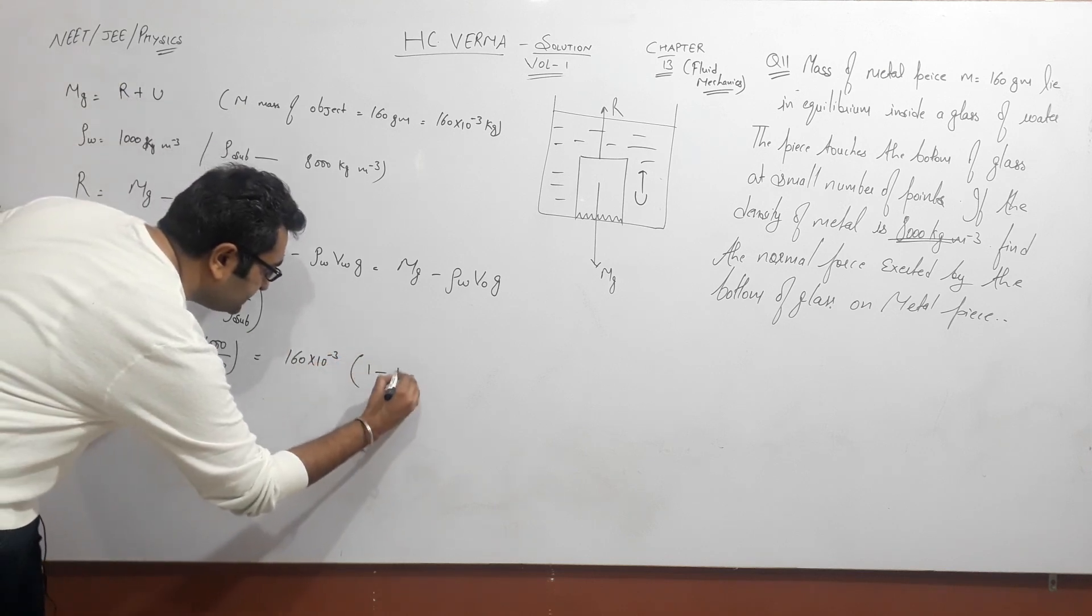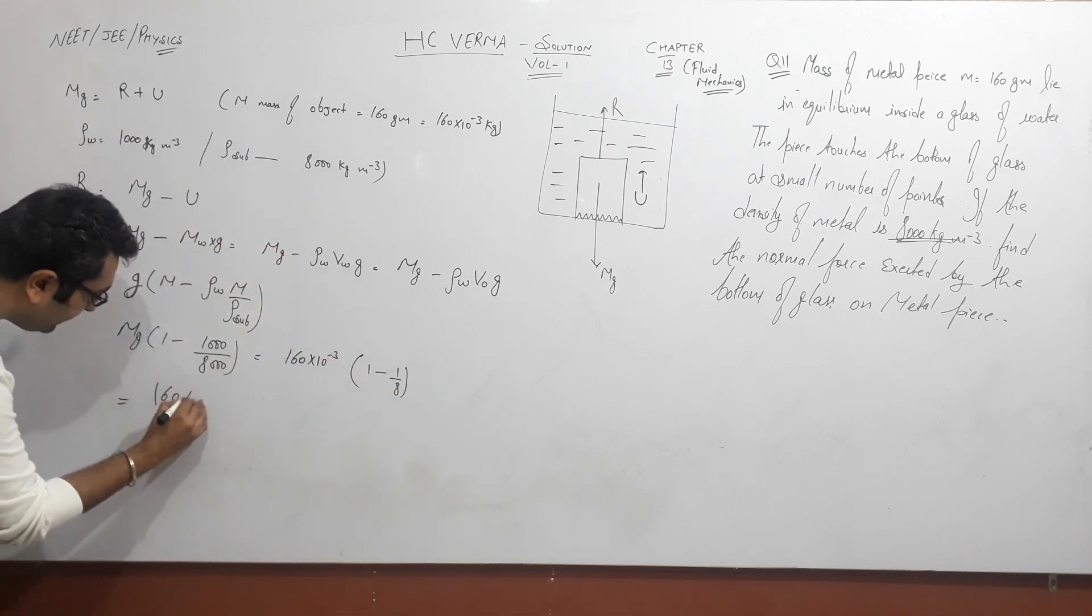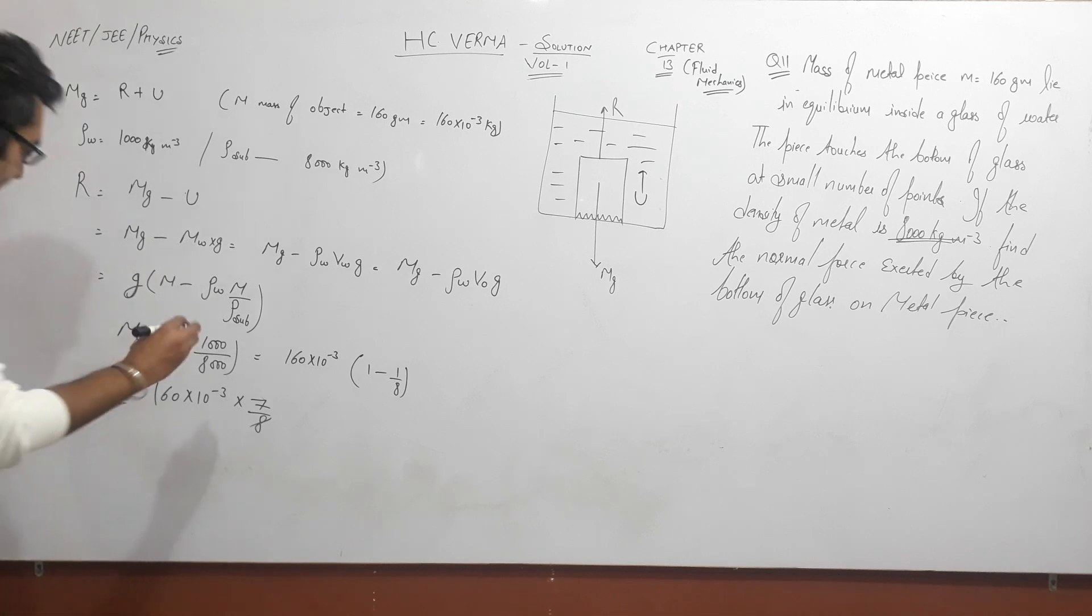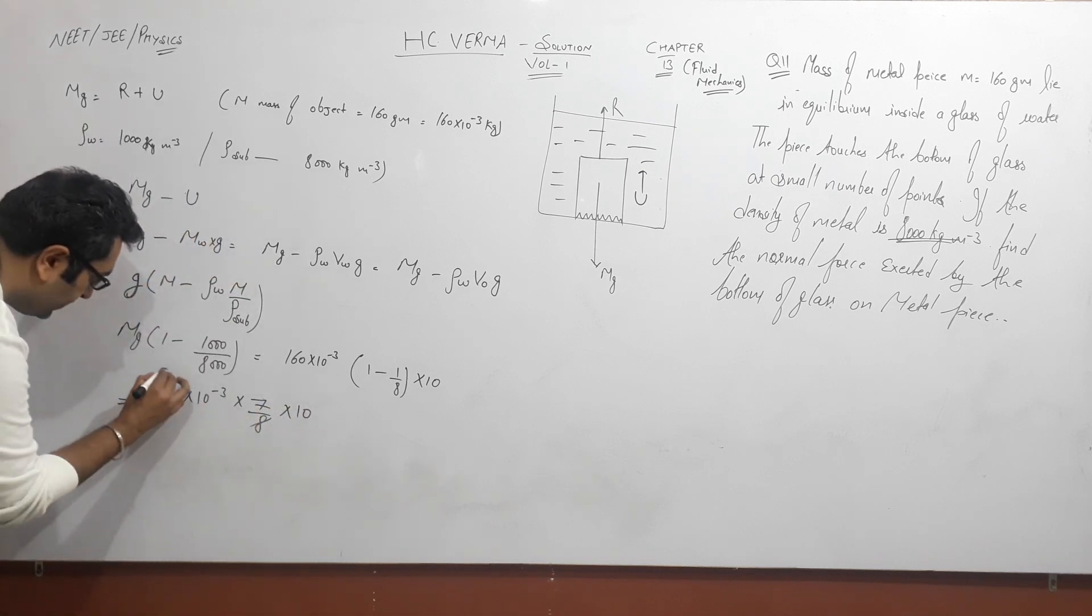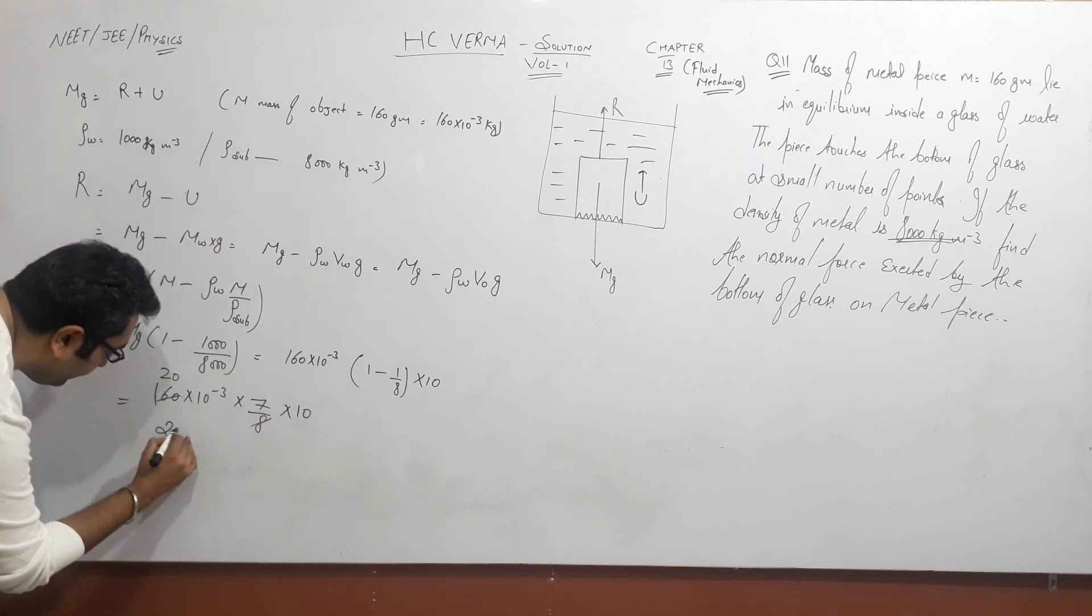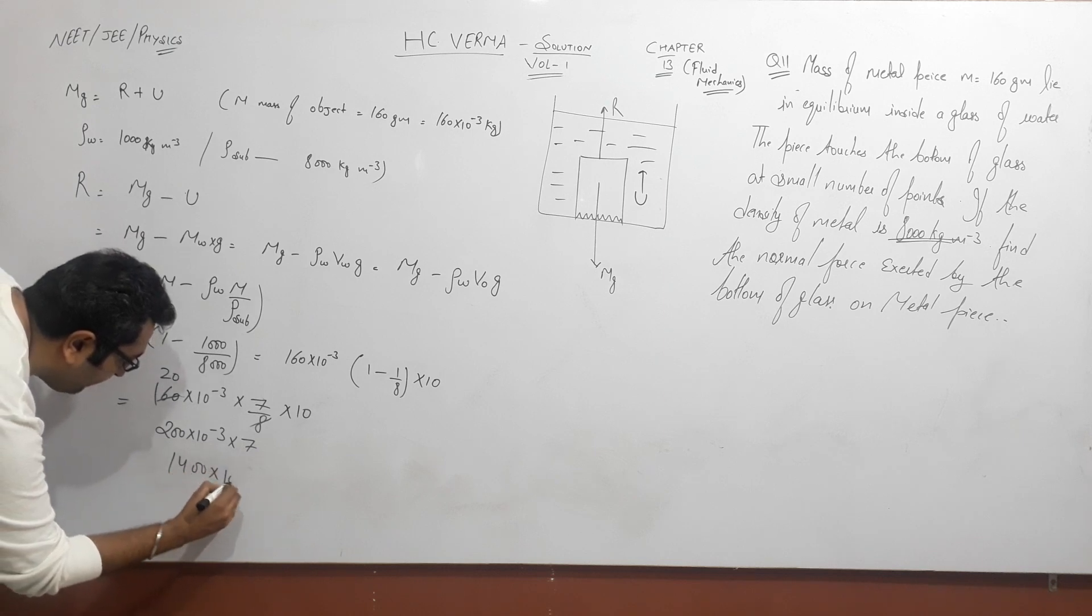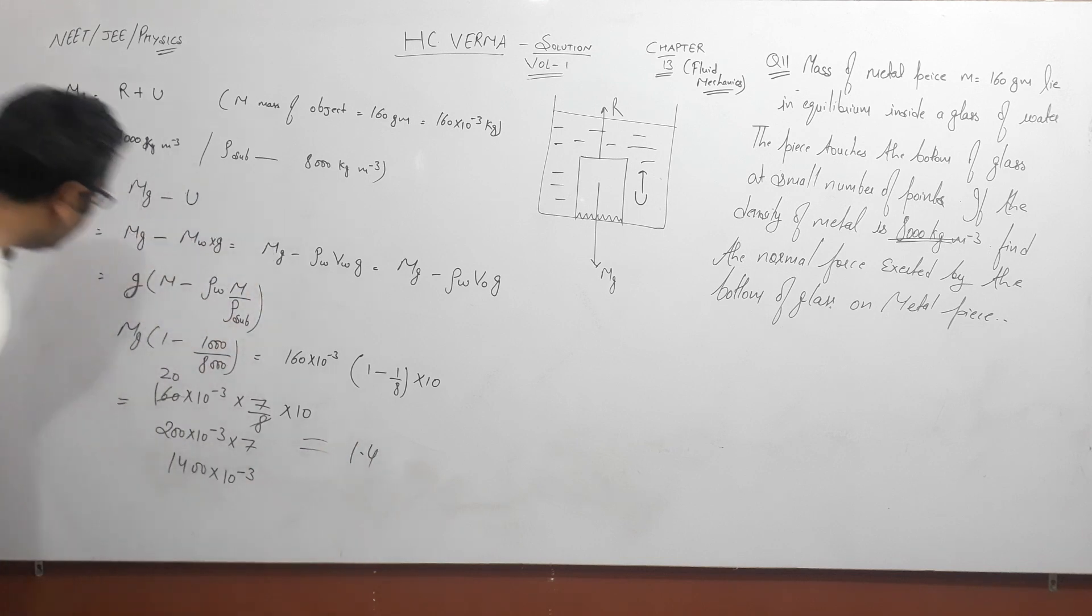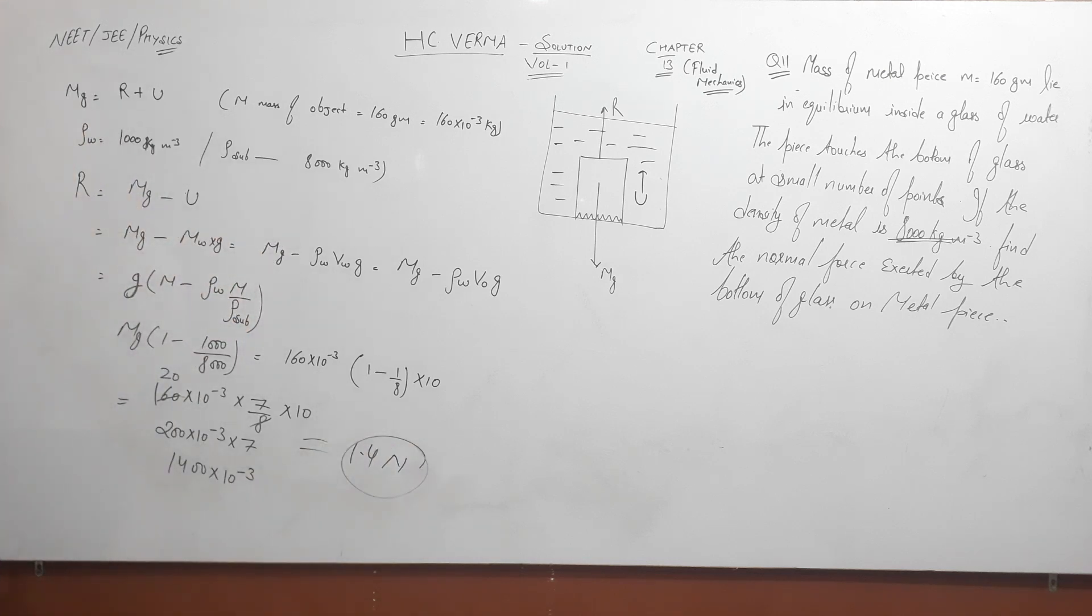So R equals mg minus density of water times m by density of substance times g. Taking mg common: mg(1 minus density of water by density of substance). That is 1 minus 1 by 8. Now solving: 160 times 10 power minus 3, that is 7 by 8, and g we take as 10. Multiply 10, that is 200 times 10 power minus 3, multiply 7, which gives 1400 times 10 power minus 3. Powers settle, so this becomes 1.4. If I remove the reaction, what is the force? So this is in Newton. So my answer is 1.4 Newton is the normal reaction by the object.